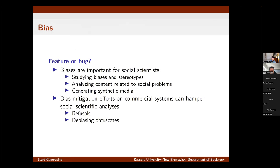At the same time, biases are important for social scientists to study — we want to study biases and stereotypes in models and analyze content related to social problems. People often do qualitative interviews to study difficult topics like injection drug use, and if we have models that refuse to discuss illegal behavior, we might be prevented from analyzing such topics or risky sexual behaviors using these models. And generating synthetic media — we might want to generate protests showing violence, but these models have potentially been adapted to not show that type of output. I argue that bias mitigation efforts on commercial systems can hamper social scientific analyses, both by refusing to generate certain content and by obfuscating bias.